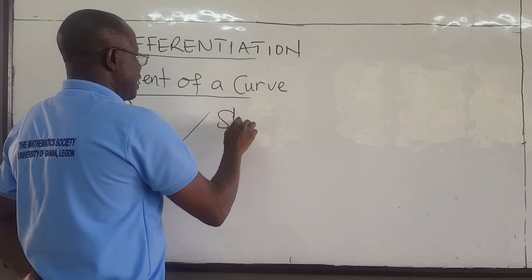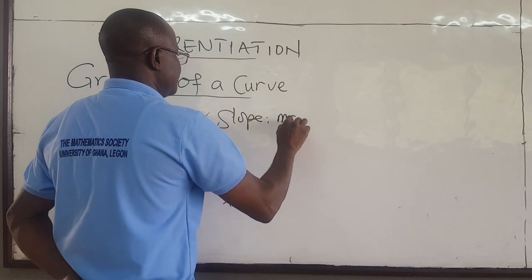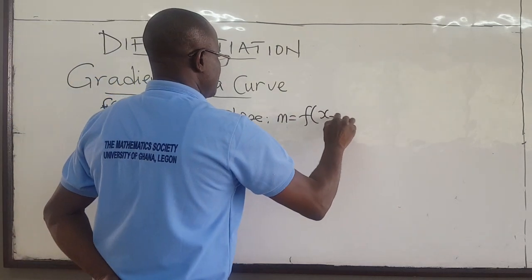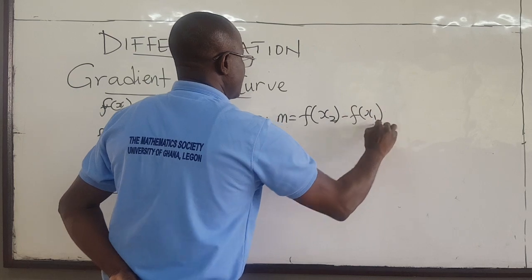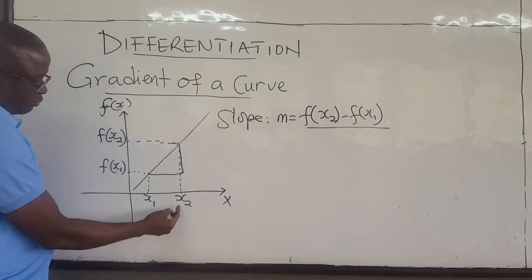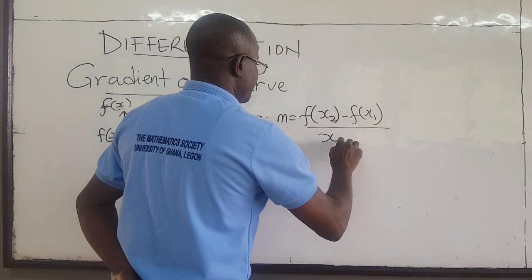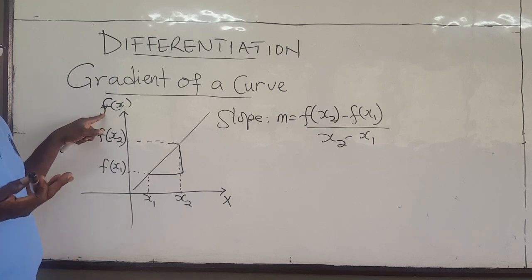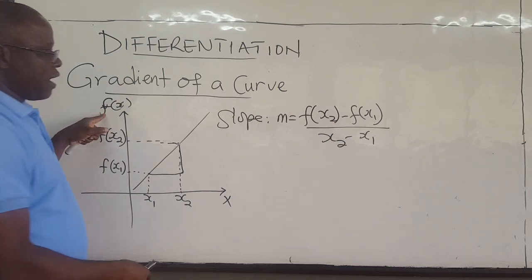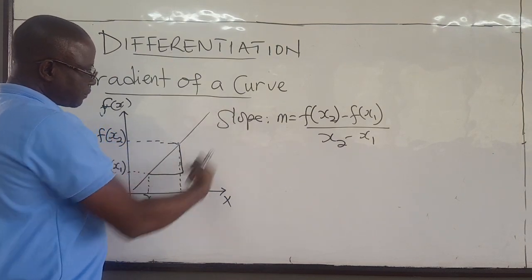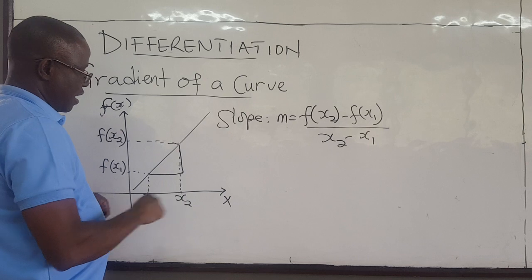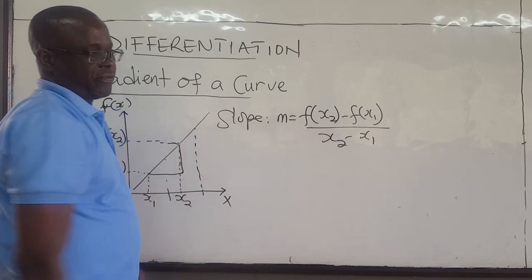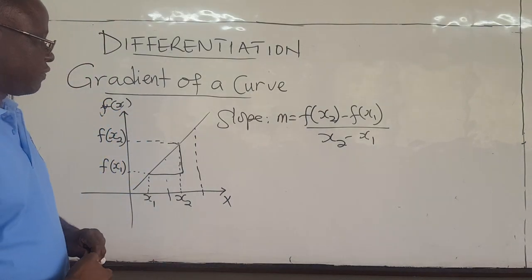The slope will be rise over run. So the slope of the line, let's call that m, will be this height — that is f(x2) minus f(x1) — all over the run, which is x2 minus x1. If you knew what the function was, say f(x) = x², and you pick any two points along this, then the slope is fixed as a constant. So this is familiar to us — we know how to find the slope of a line.